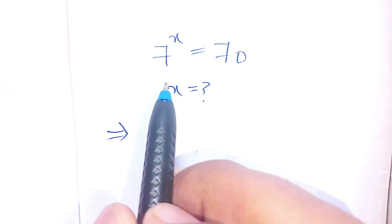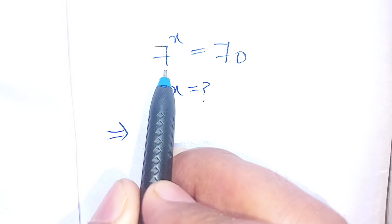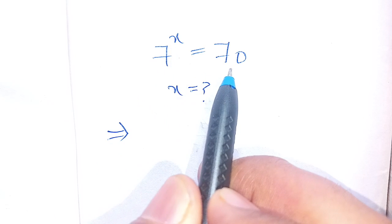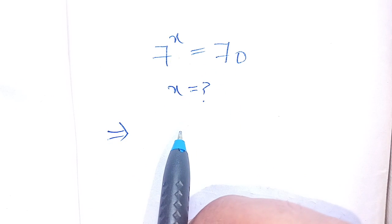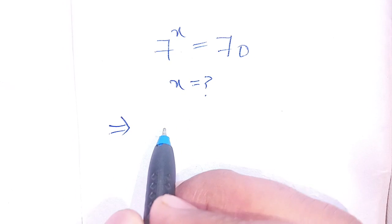Hello everyone, in today's video we are going to solve this exponential equation: 7 to the power of x is equal to 70. We have to find the value of x which satisfies this exponential equation. Let us solve this.